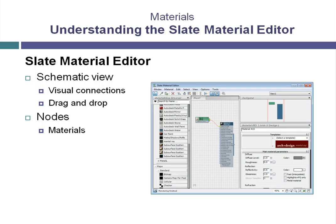There are many types of nodes available for use in the Slate Material Editor. The Material Nodes provide access to all the standard and mental ray materials available for use in 3ds Max. Those include the Arch and Design Material, the Multi-Subobject Material, and the Blend Material, as well as many others included with 3ds Max.